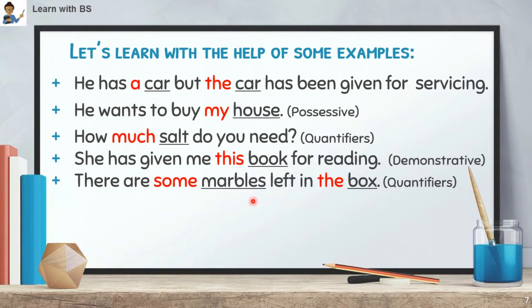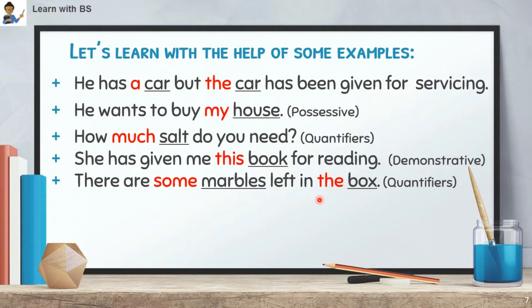Example 5: 'There are some marbles left in the box.' Here, 'marbles' is a noun — the word before it is 'some', which is a Quantifier determiner because it tells quantity. Also, 'box' is a noun — the word before it is 'the', which is also a determiner of the Article type.